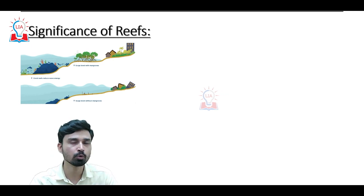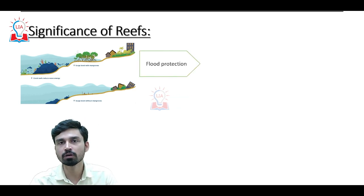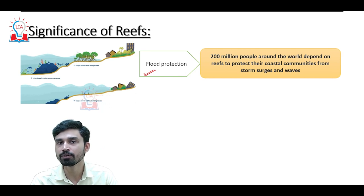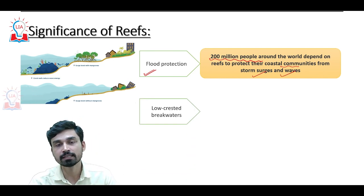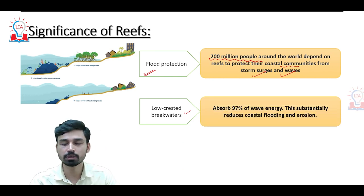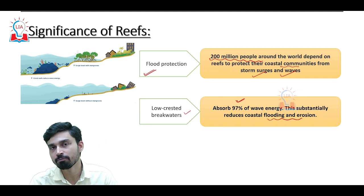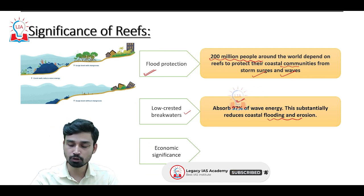Since corals live in oceanic areas and most directly affect coastal communities, one might ask why all humans should be concerned. The first and foremost significance of coral reefs is that they ensure protection from coastal flooding. According to a recent report released by the United Nations Development Programme, almost 200 million people across the world depend on coral reefs to protect their coastal communities from storm surges and waves. Corals also act as a low-cost breakwater, absorbing almost 97 percent of tidal and coastal wave energy, which substantially reduces coastal flooding and erosion, positively impacting soil health in coastal areas and leading to higher agricultural yields in coastal plains.